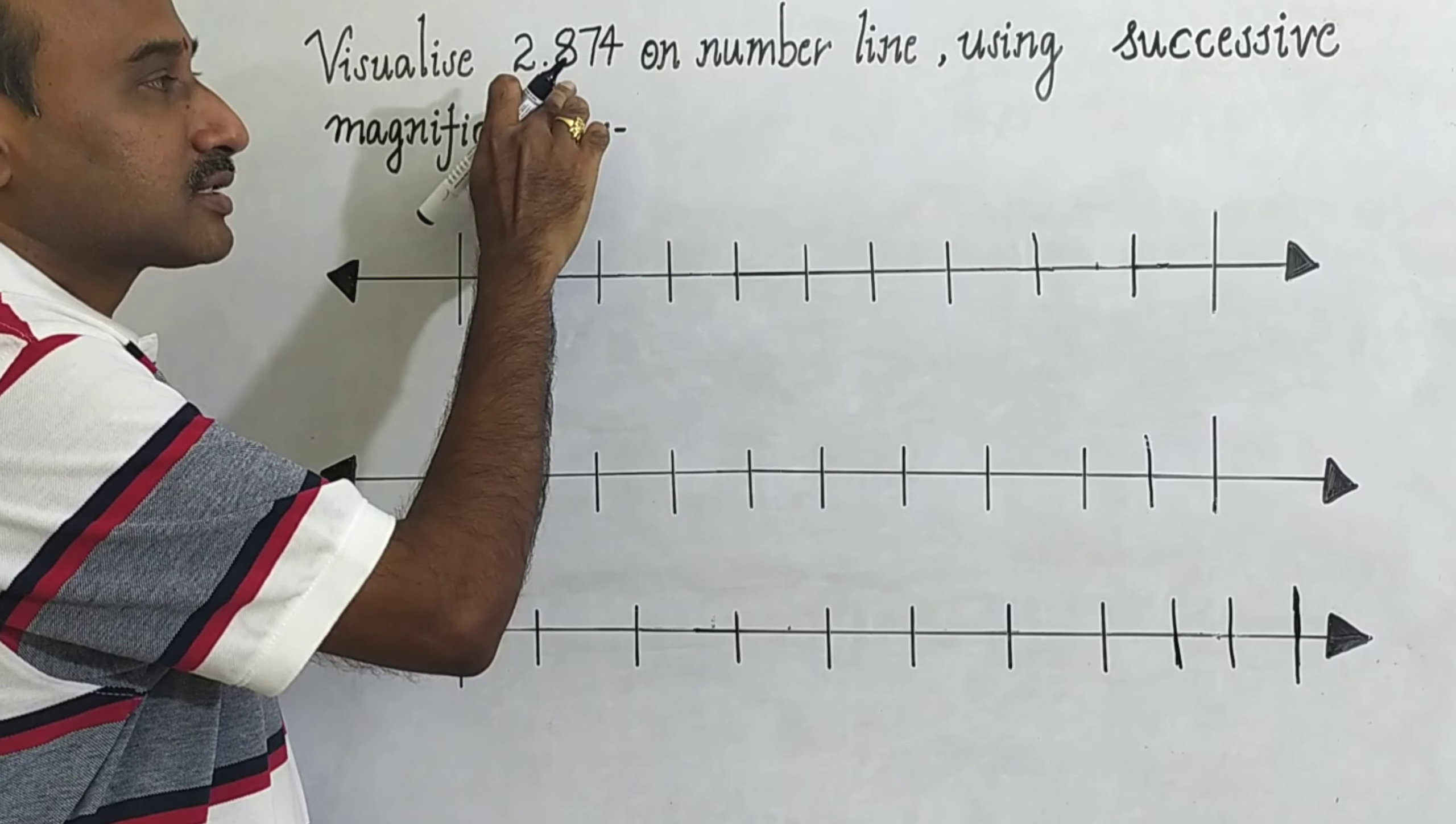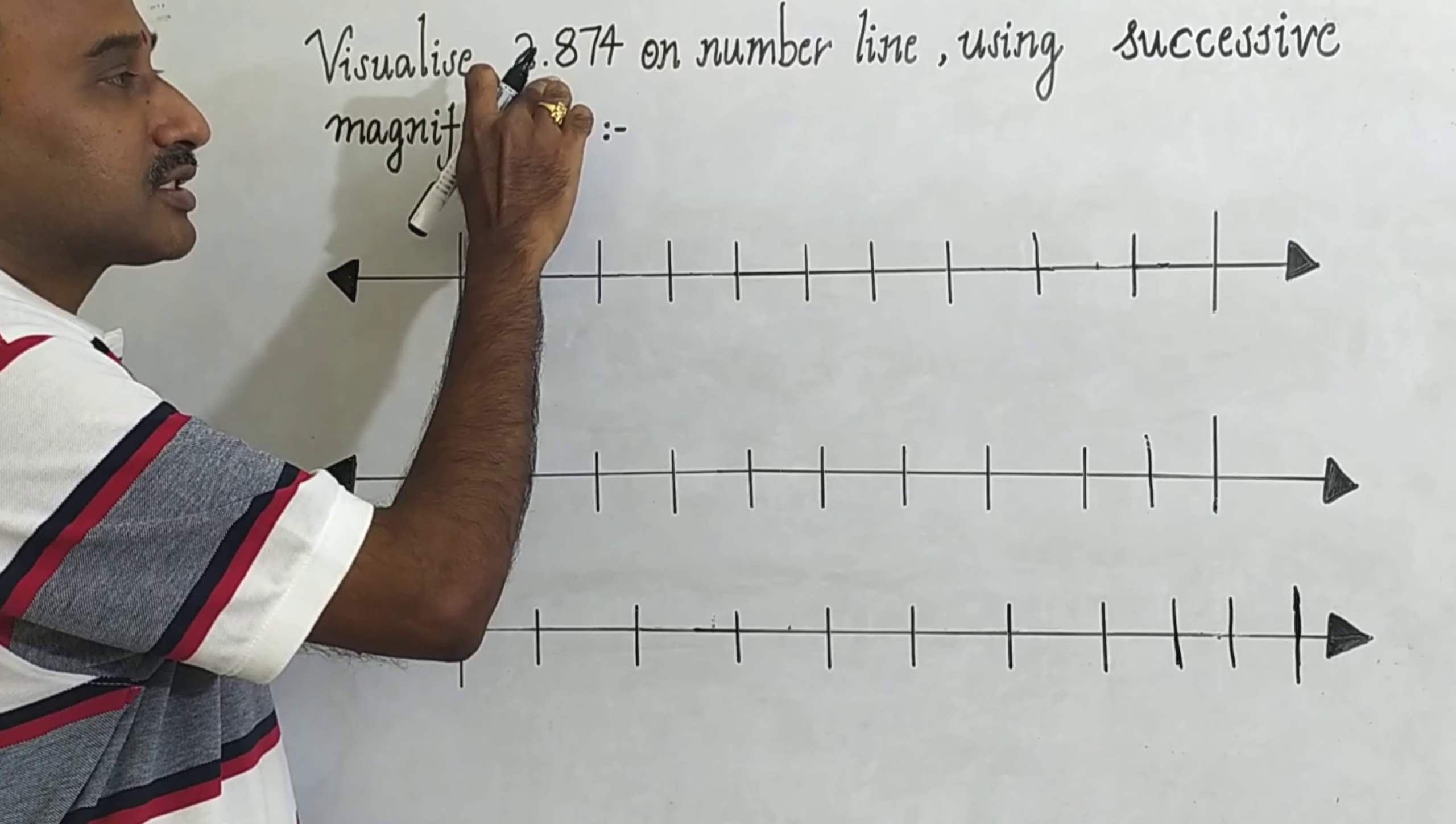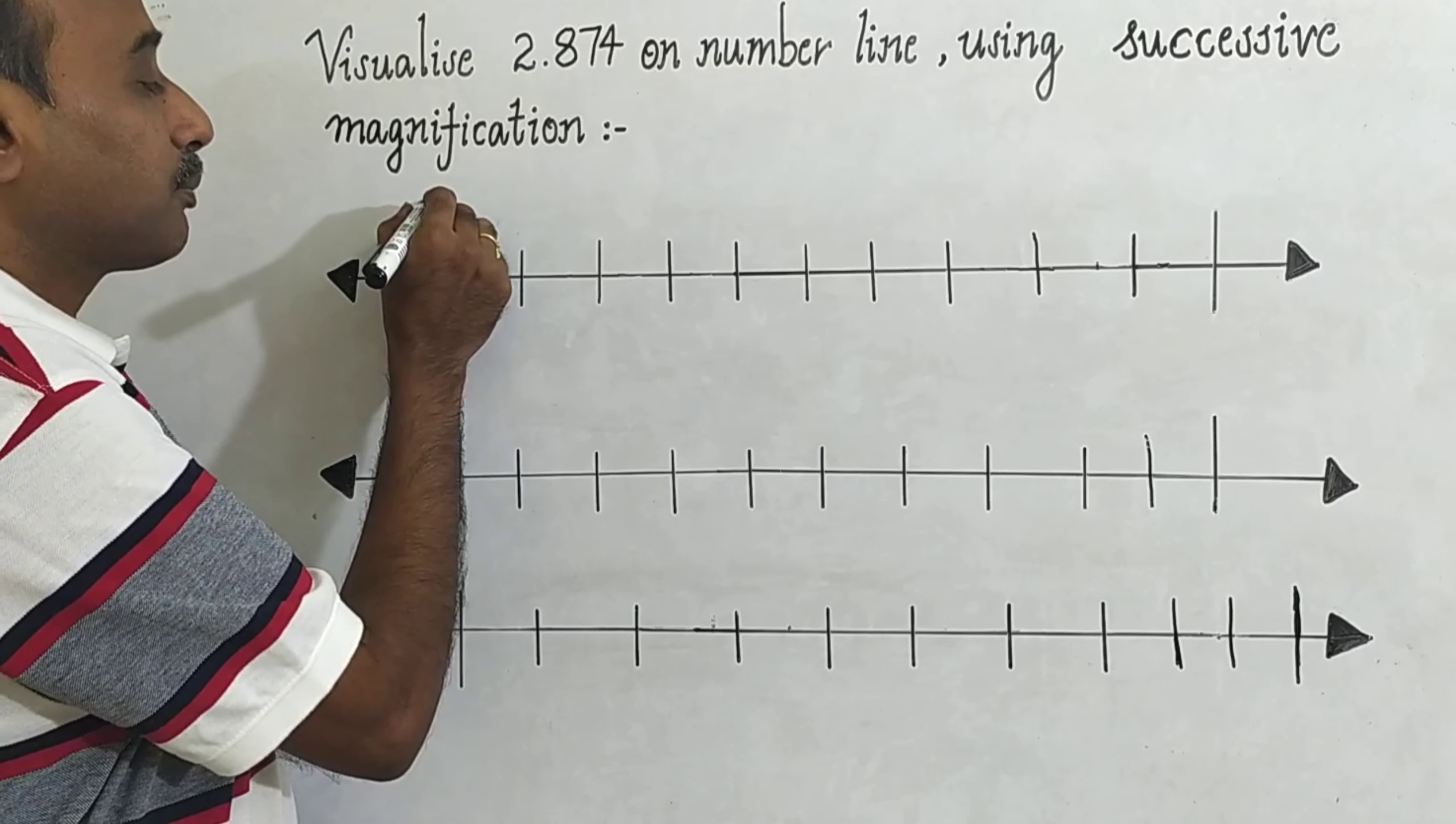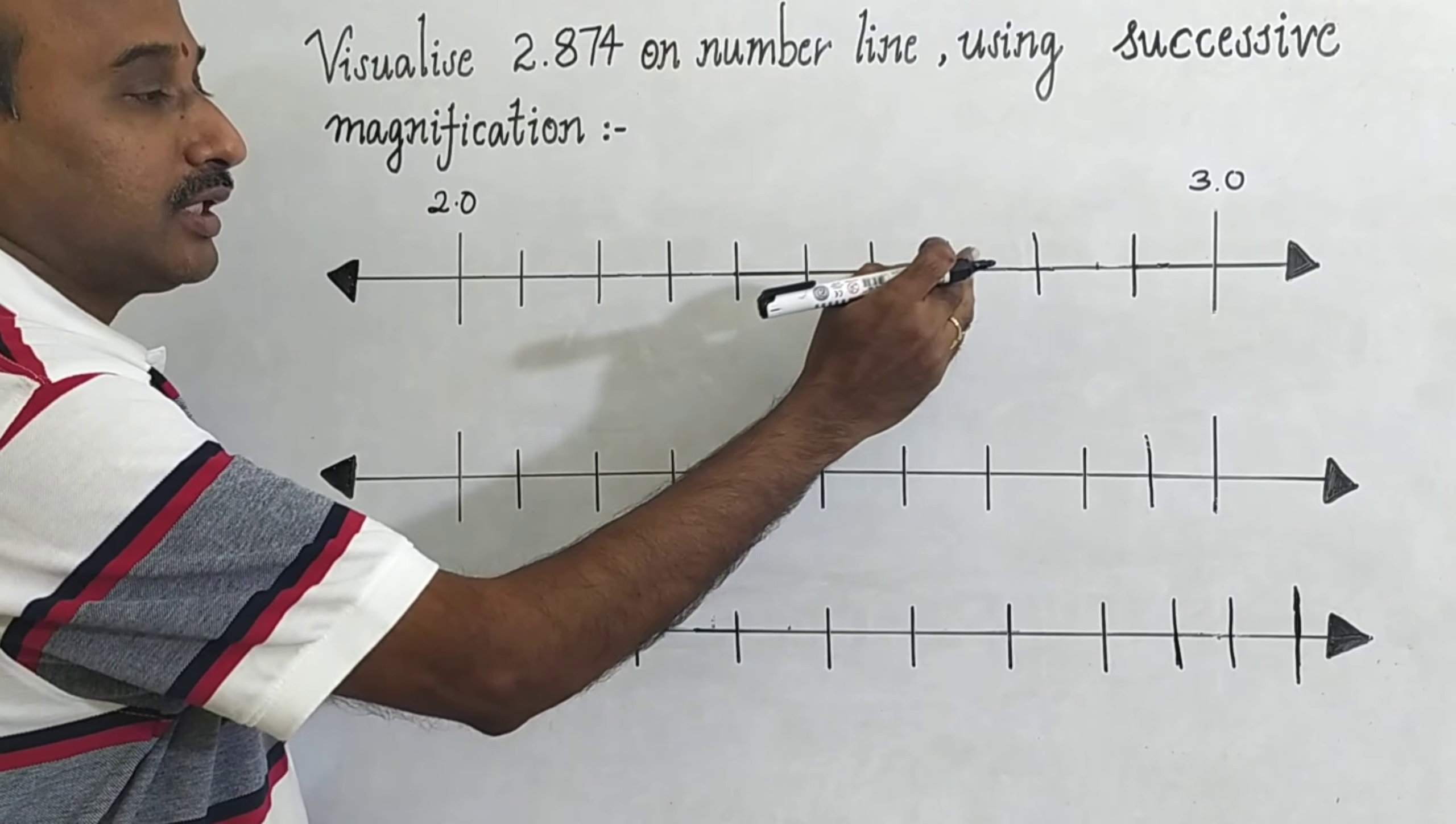already this number is terminating decimal, 2.874. Now this 2.874 lies between 2 to 3, in between 2 and 3. So now on the number line you can represent 2 and here 3. Now you have to divide